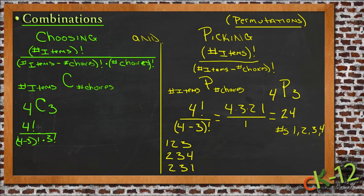That gives us 24 on top. On the bottom we have 1 factorial, or 1, times 3 times 2 times 1, which is 6. So 24 divided by 6 is 4. There are really only 4 possible combinations available, even though there are 24 possible permutations.